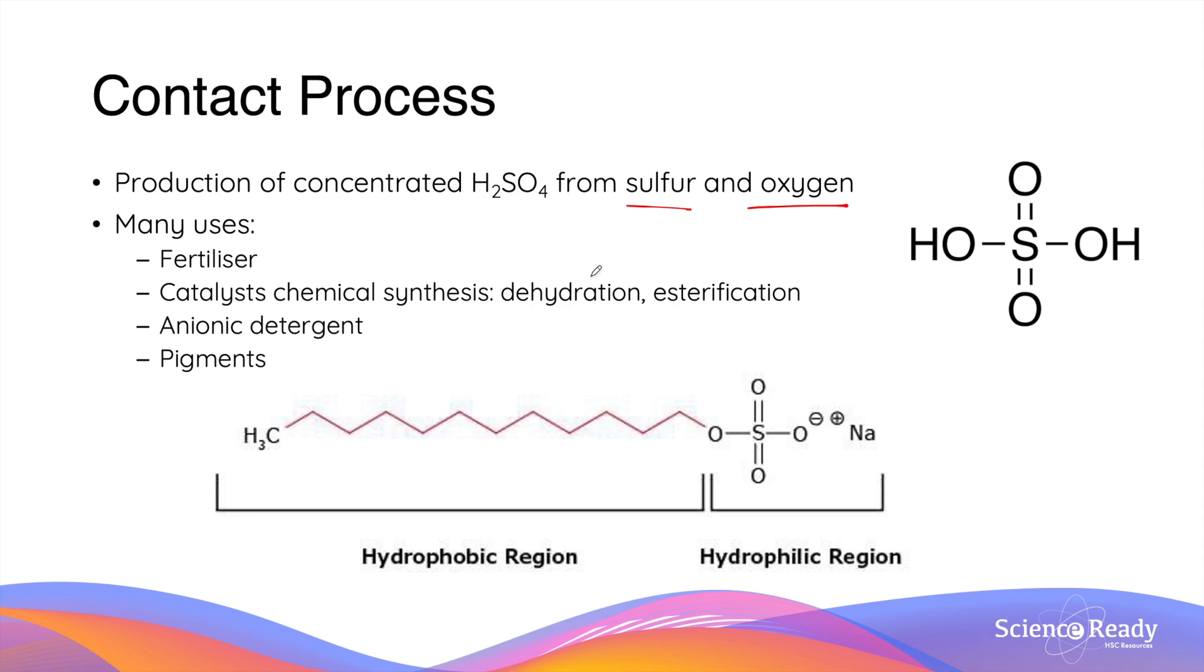Sulfuric acid is a very important reagent that we use in a variety of different applications. The primary use is again fertilizer, similar to the ammonia that we produce in the Haber process.